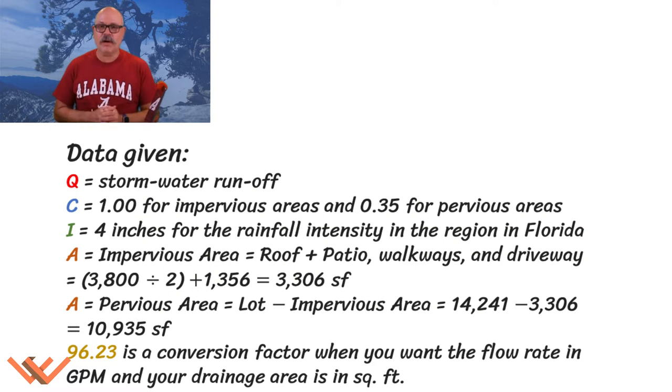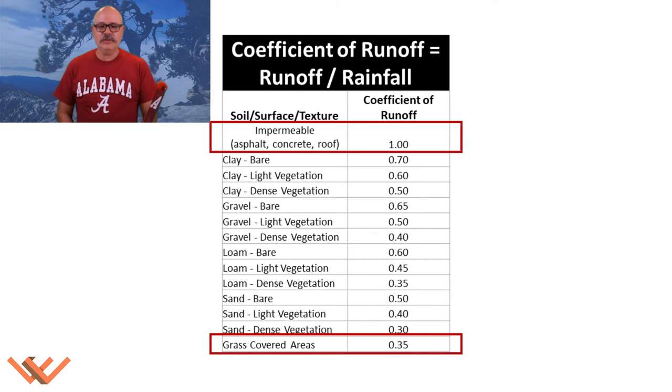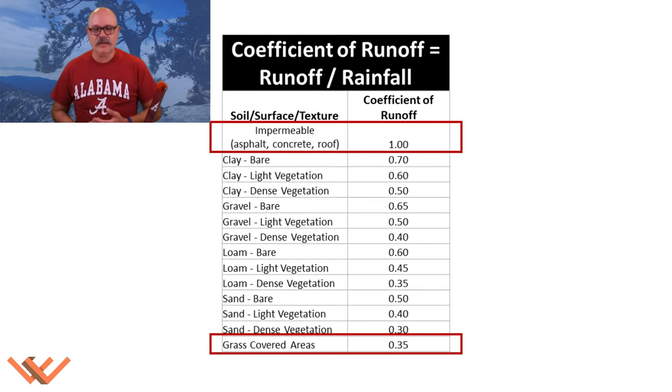Let's take a look at the data that's given. So we have the storm water runoff, which is Q. C is the coefficient for runoff. One is for impervious areas, so that's the roof, the asphalt and concrete. That means rain can hit it and it's not going to absorb it much, if any at all. And for the grass area, we're using the coefficient of 0.35.